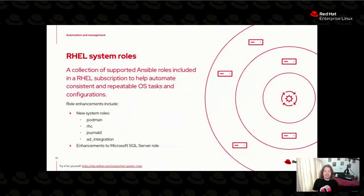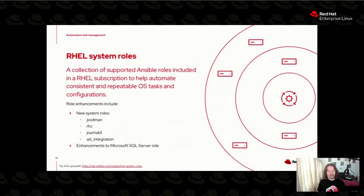I mentioned system roles — I think there are over 20 RHEL system roles, based on the upstream Linux system roles project you can find on GitHub. We've introduced four new system roles with 9.2: Podman, so you can now manage the Podman engine using a system role; RHC (Red Hat Connector); JournalD; and AD integration. I tease our product manager Brian Smith that I'm still waiting on a system role to manage all of my system roles.